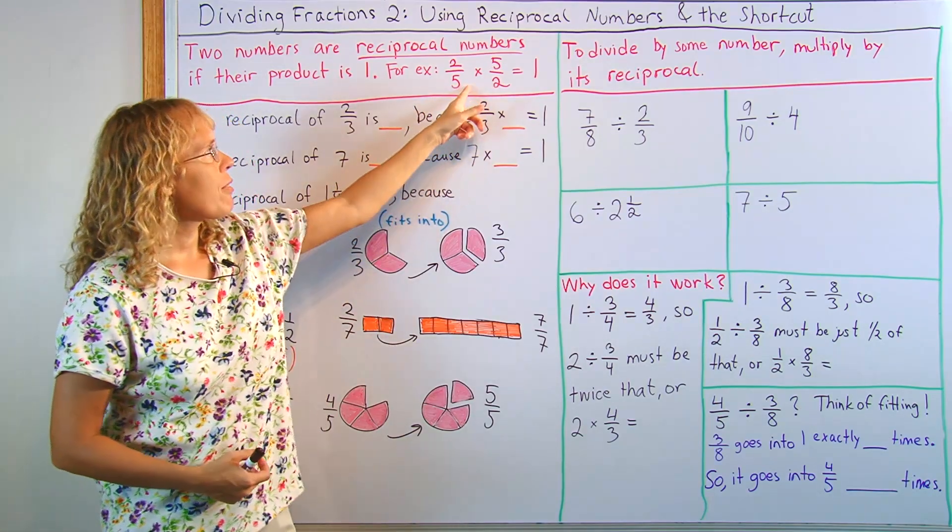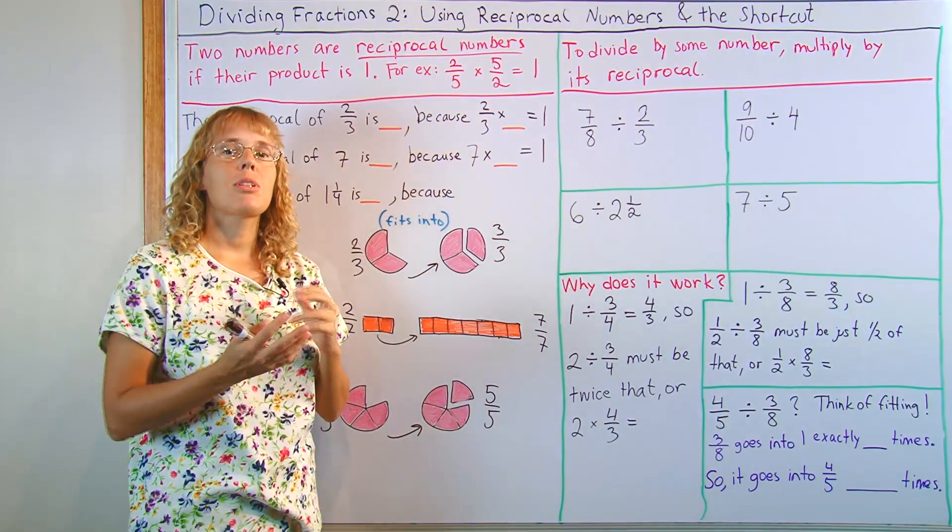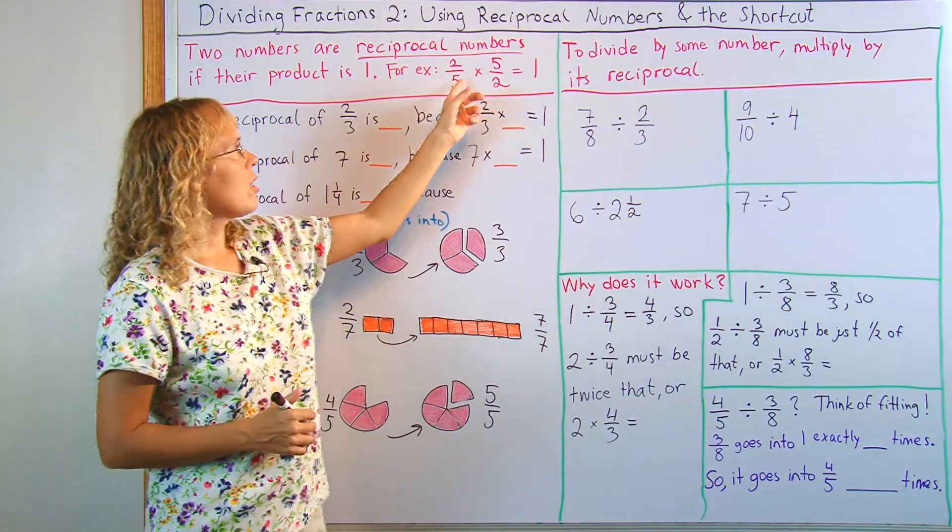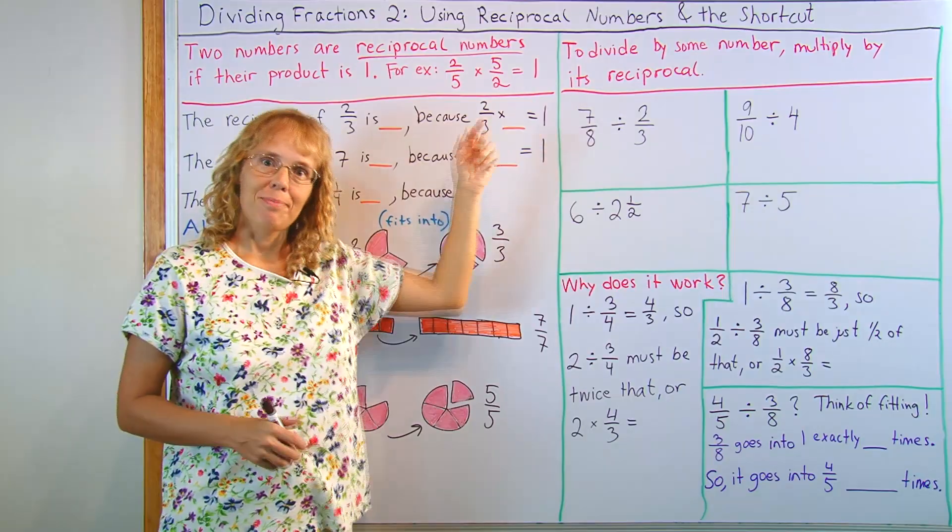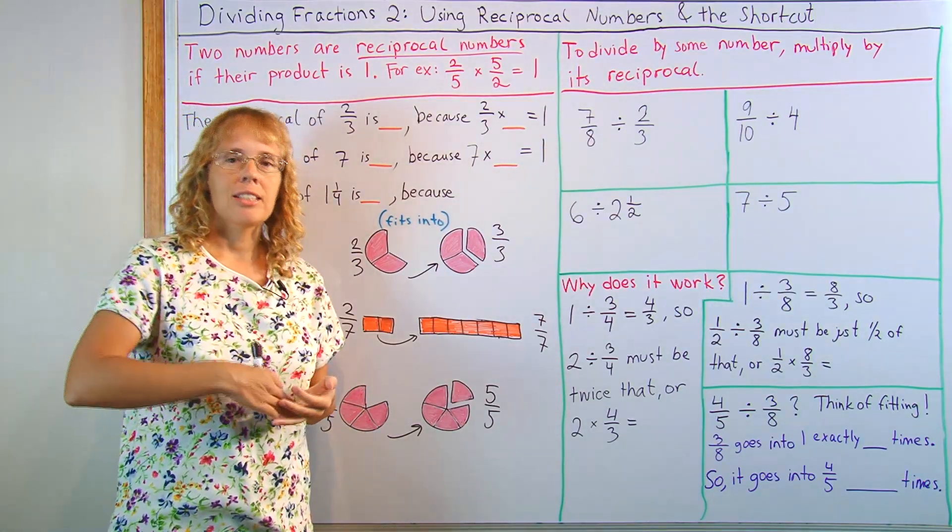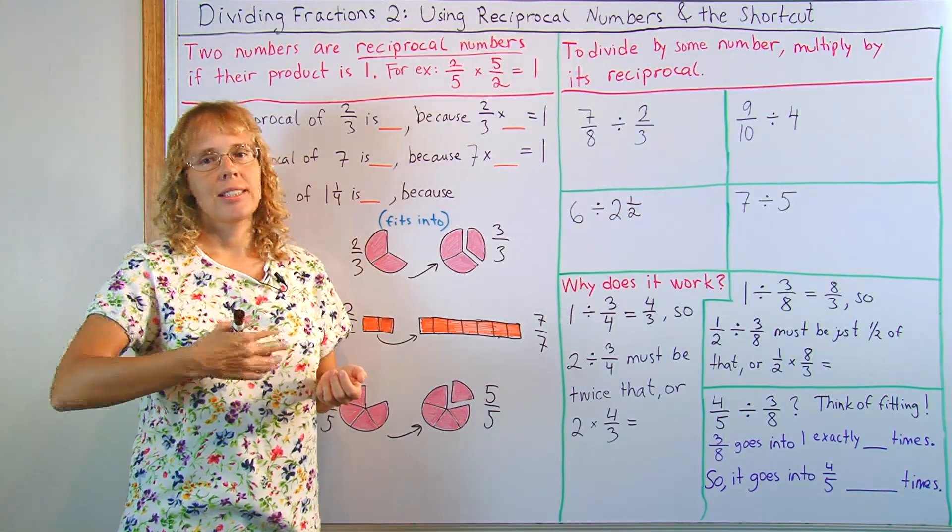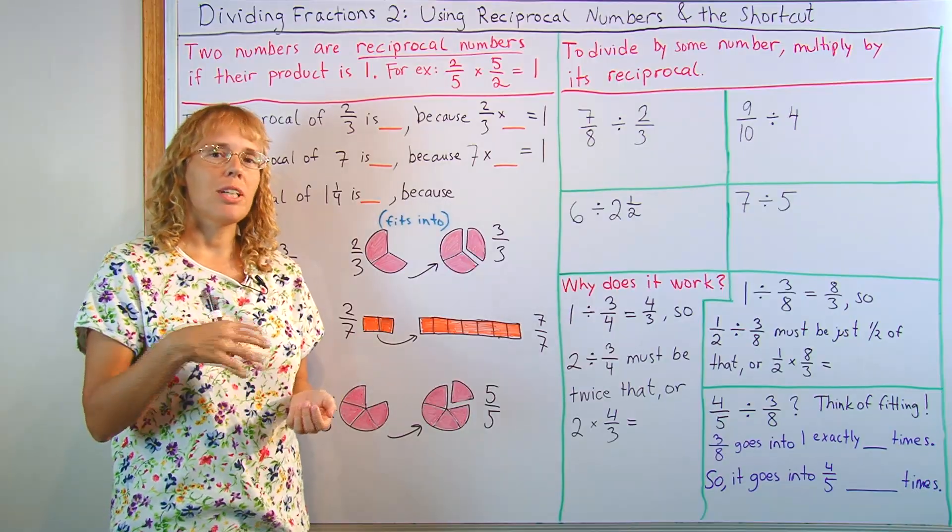That means, for example, here, two-fifths and five-halves are each other's reciprocal numbers. Because if you multiply them, you get one. Or seven and one-seventh. The reciprocal number of seven is one-seventh, and the reciprocal of one-seventh is seven. Because if you multiply them, you get one.